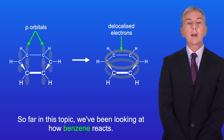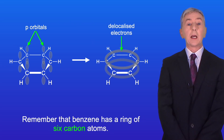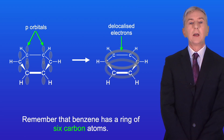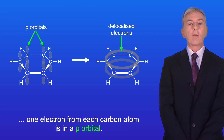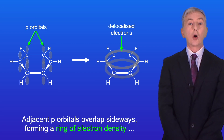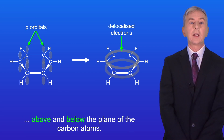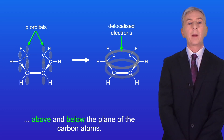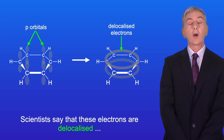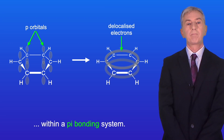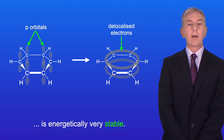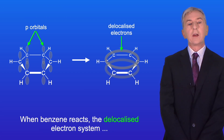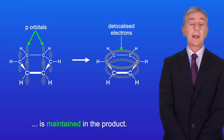So far on this topic we've been looking at how benzene reacts. Benzene has a ring of six carbon atoms and each carbon is also bonded to a hydrogen atom. One electron from each carbon atom is in a p orbital. Adjacent p orbitals overlap sideways, forming a ring of electron density above and below the plane of the carbon atoms, and these electrons are delocalized within a pi bonding system. This pi bonding system of delocalized electrons is energetically very stable.